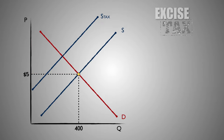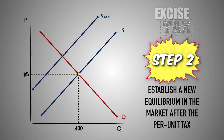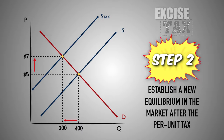Step 2: Establish a new equilibrium in the market at the intersection of the demand curve and the new supply curve after the tax is imposed. From here, we can determine everything we need to know about the impact of this per unit tax on the market for Good C. After the $4 per unit tax, the price of Good C has increased to $7, and the output in the market has decreased to 200 units.